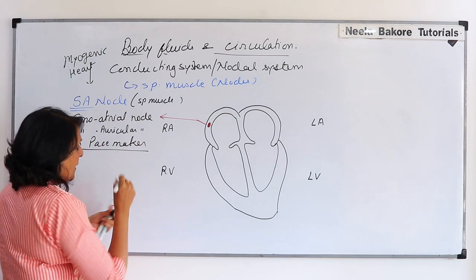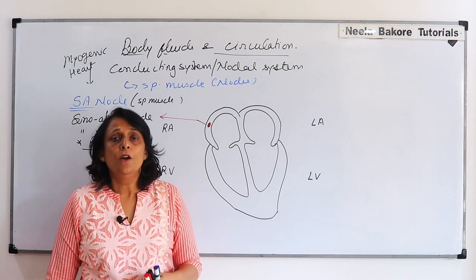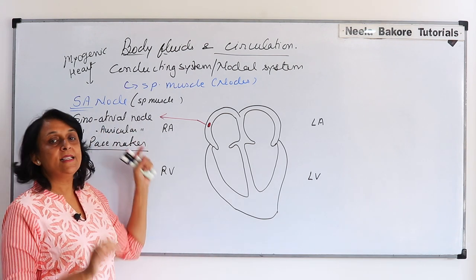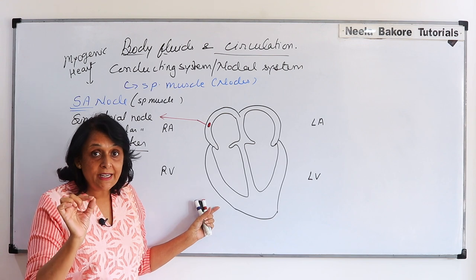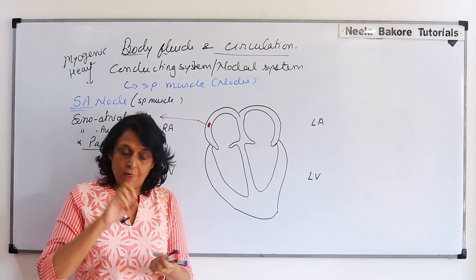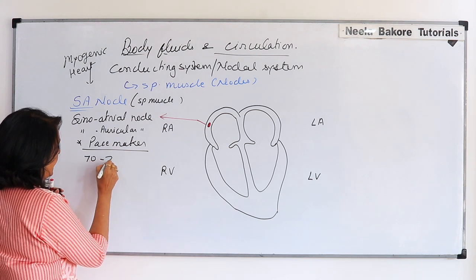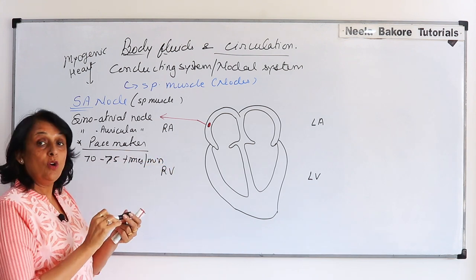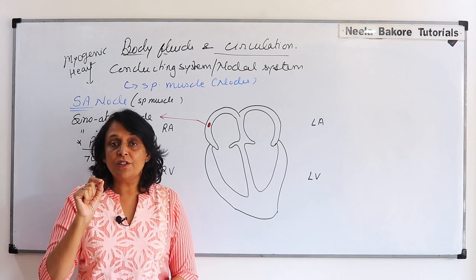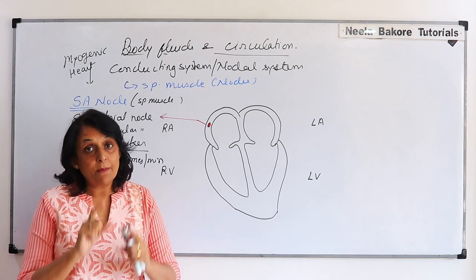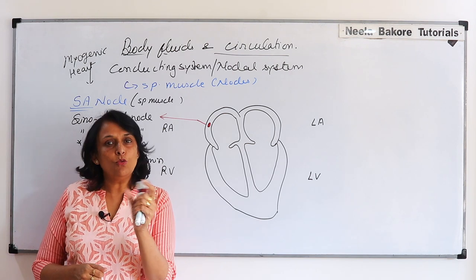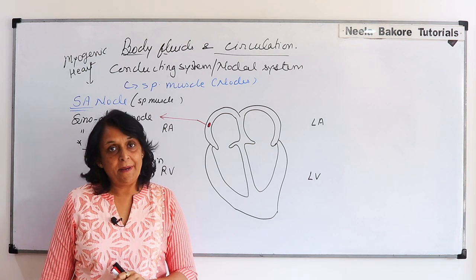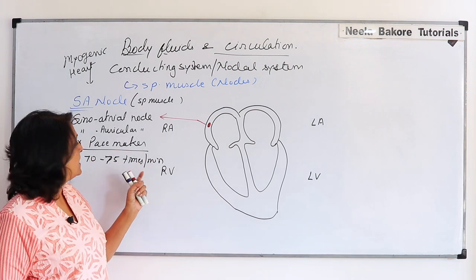The SA node is called the pacemaker. You may have heard that some patients have been fitted with a pacemaker — that is because of this. Our heartbeat originates from here, and this stimulus comes 70 to 72 times — or about 75 times — per minute. If one stimulus is generated, the heart contracts once, giving one heartbeat. So our heartbeat is 72 per minute.